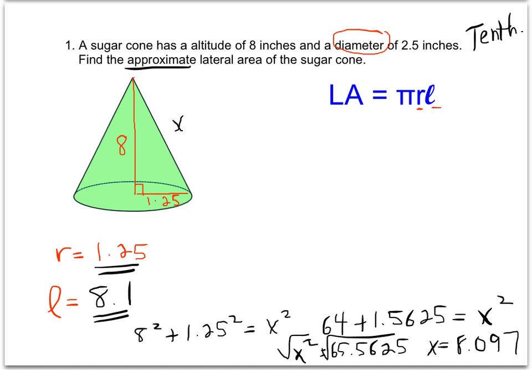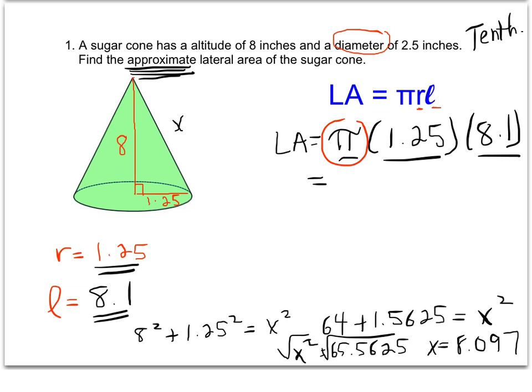Now that I have the values, I can plug those into the formula for the lateral area, and I get lateral area equals pi times my radius times my slant height. And remember, because we want the approximate value, this is when you are going to use the pi button when we plug this all into the calculator. Plug in pi times 1.25 times 8.1. And it's important to use the pi button when you're calculating this and not round it to 3.14 until the end. When I plug that all in, I get 31.8086, and it goes on and on. I want to round, remember, to the nearest tenth. So my final answer, my lateral area of the sugar cone is 31.8.